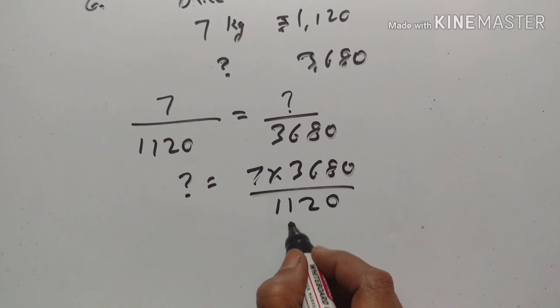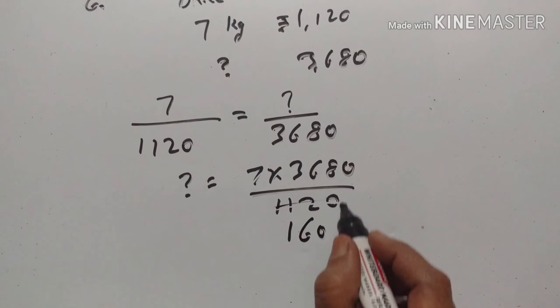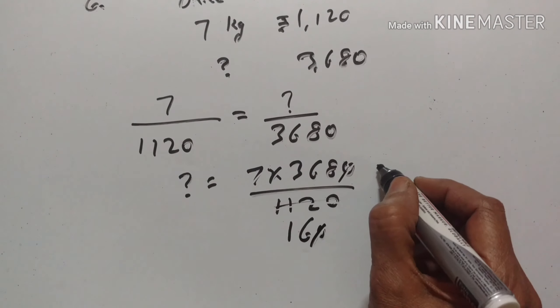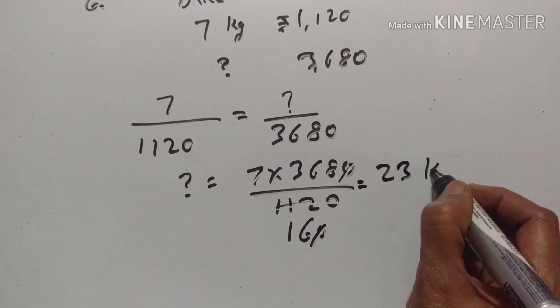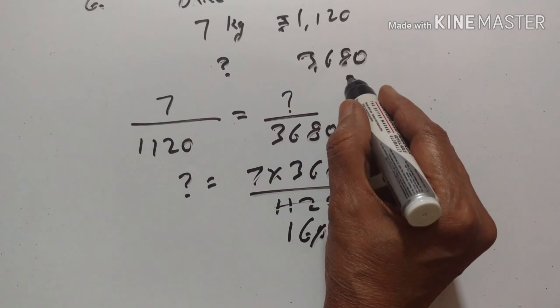7 1s are 7, 4 remains, 7 6s are 42, 0 goes off, 16 2s are 32, 4 remains, 16 3s are 48. So 23 kg of rice can be bought for Rs. 3680.